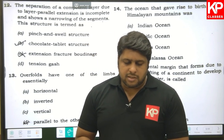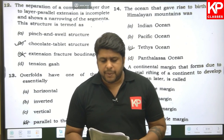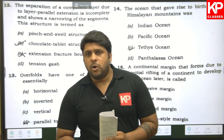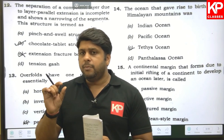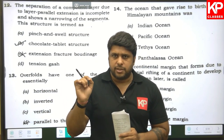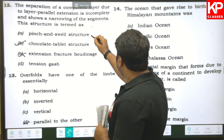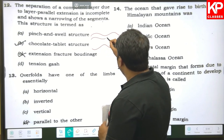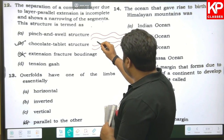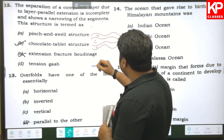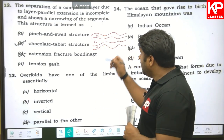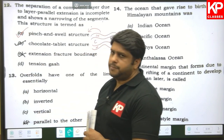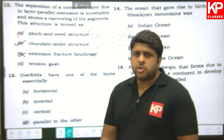Question twelve: the separation of a competent layer due to layer-parallel extension is incomplete and shows a narrowing of the segments — this structure is termed what? This is about boudinage structures. When the incompetent layer does not fracture and the separation of the competent layer is also not complete, this kind of structure is known as a pinch-and-swell structure. So A is the right answer.